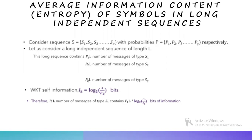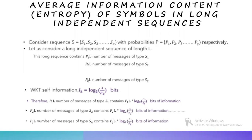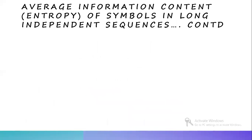And P2 into L number of messages of type S2 contains P2·L·log(1/P2) base 2 bits of information, up to Pq into L number of messages of type Sq. Next, we need to see the total self-information content of the message.